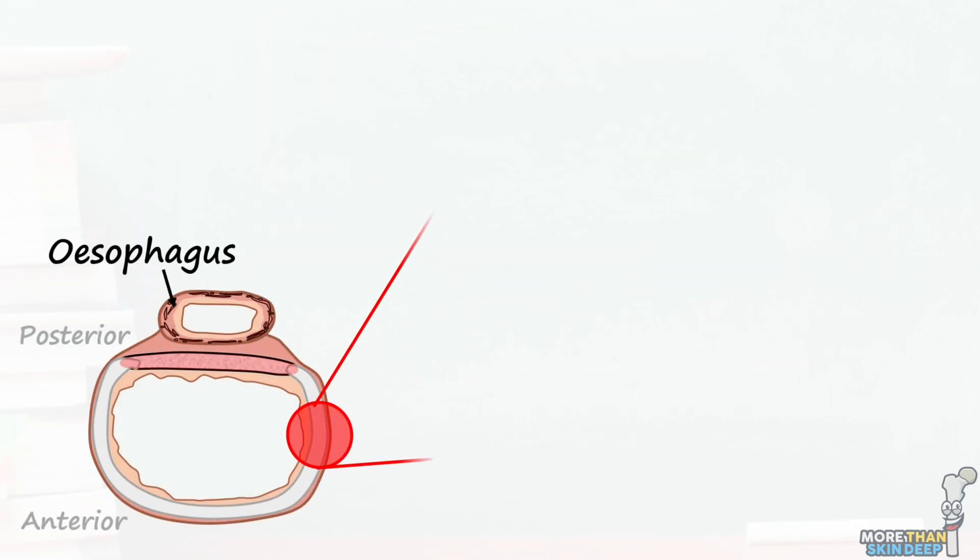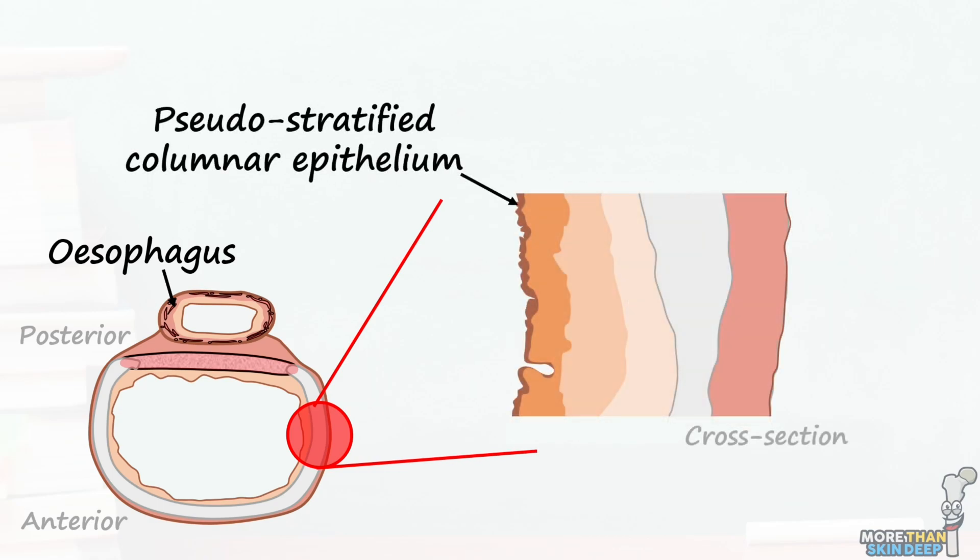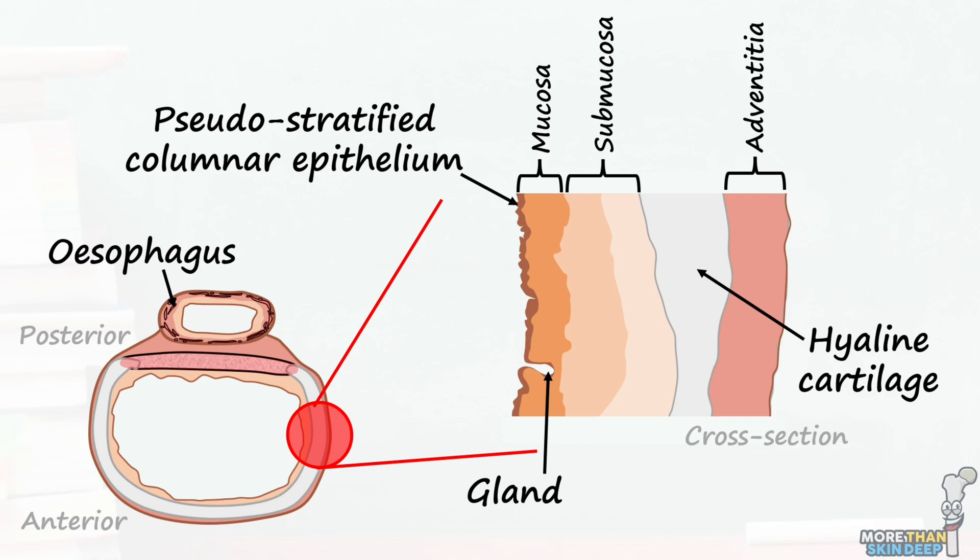The innermost layer of the trachea is composed of pseudo-stratified columnar epithelium with goblet cells that secrete mucus to trap particulate matter trying to make its way down into the lungs. Subsequent layers contain elastin, collagen, and hyaline cartilage and act to support the trachea whilst allowing some flexibility.